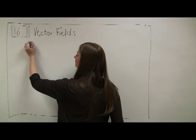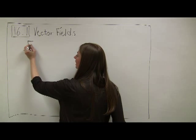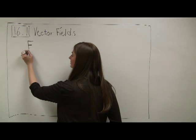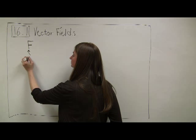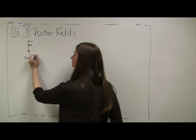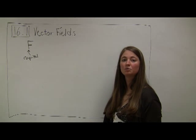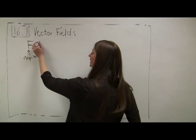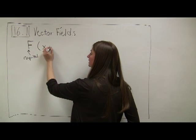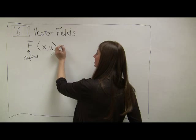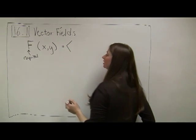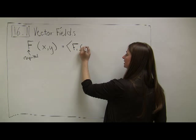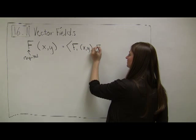Let's say that we have a function, and typically, when we have our vector functions, we always use capital letters to represent the function. Before, when we were talking about real-valued functions, we would use little f's. And the inputs are going to be points in space, but our outputs are going to be vectors.